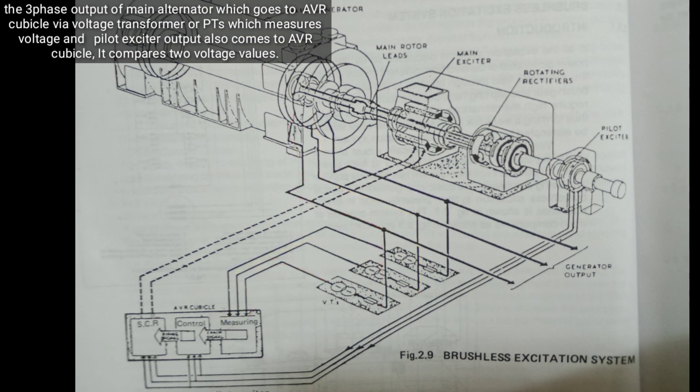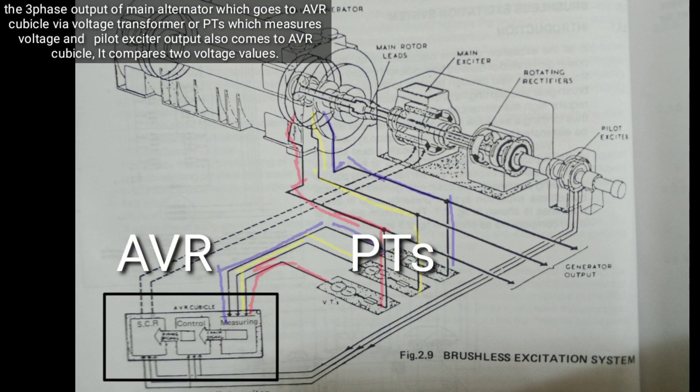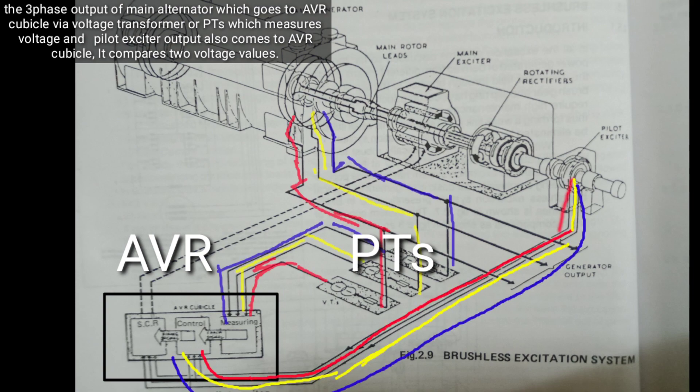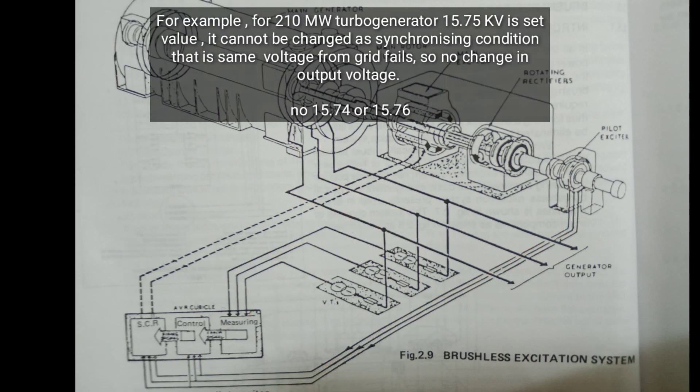The output goes via voltage transformers or PTs which measure voltage, and the pilot exciter output also comes to the AVR cubicle. It compares the two voltage values. For example, for a 210 megawatt generator, 15.75 kilovolts is the set value. It cannot be changed due to synchronizing condition.